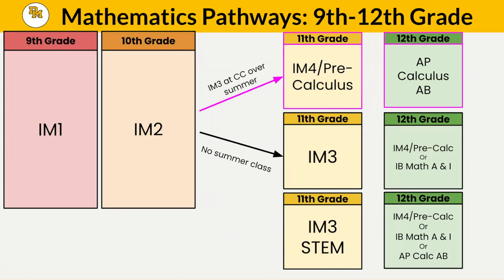This is the pathway from ninth to twelfth grade for students who enter Delmar High School in Integrated Math 1. In tenth grade, they would take Integrated Math 2. Over the summer, some students choose to take Integrated Math 3 at a community college. If they did that, they'd be able to take Integrated Math 4 Pre-Calculus in eleventh grade, followed by AP Calculus AB in twelfth grade.